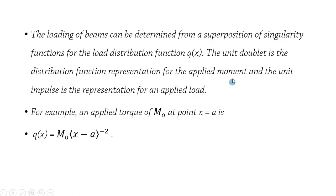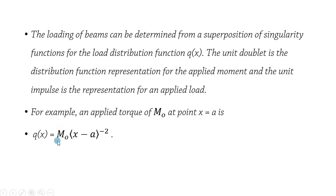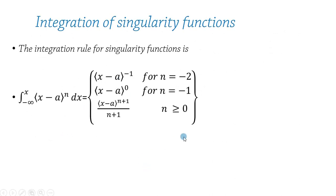The loading of beams can be determined from superposition of singularity functions for the load distribution function q(x). The unit double rate is the load distribution function representation for an applied moment, and the unit impulse represents an applied load. For example, if an applied torque or moment M₀ is at point x equals a, the load function due to this moment is M₀ times the singularity function x minus a to power negative two, producing the load distribution function.